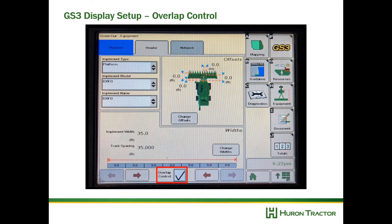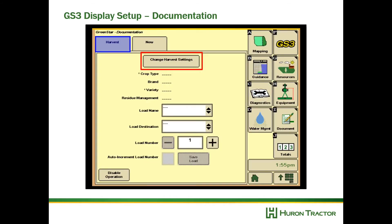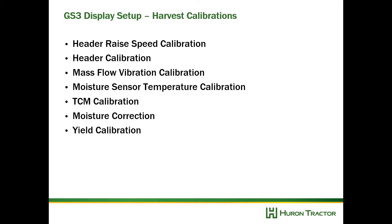Now we're going to go to the documentation button, go to our harvest settings, and select our crop type, brand, and variety. After connecting the header, there are some critical calibrations that should be done.